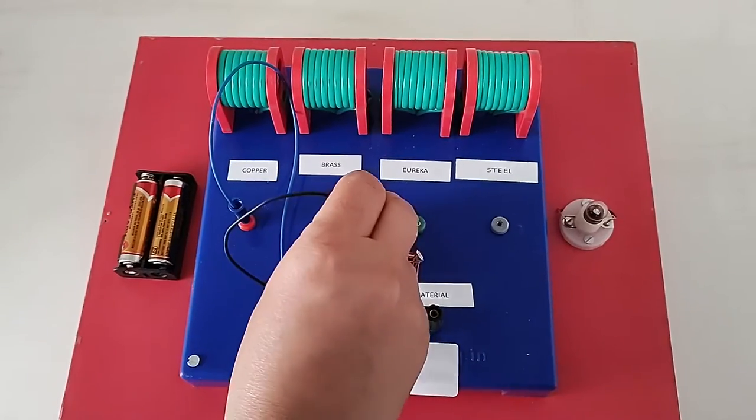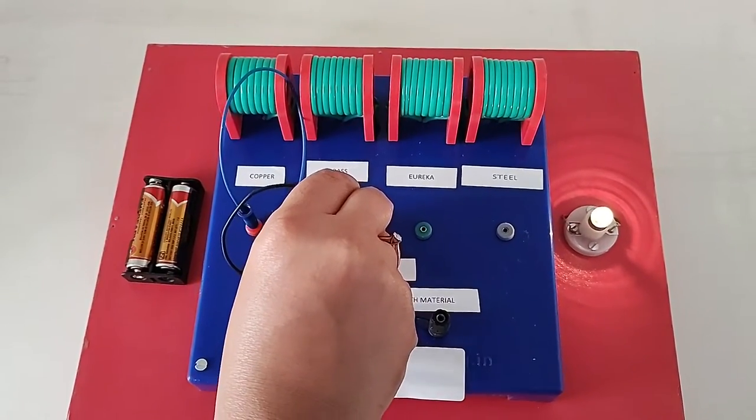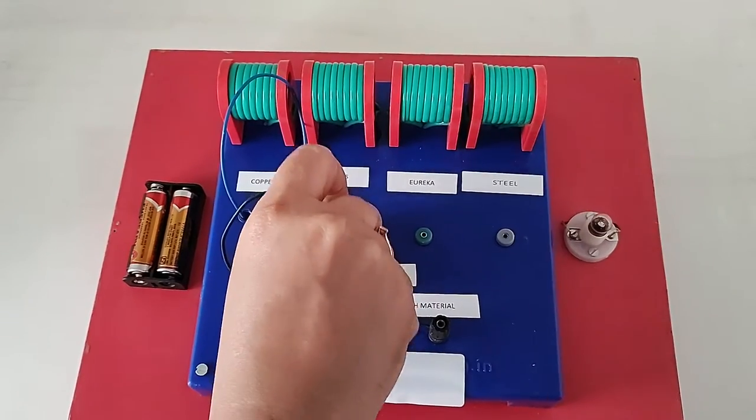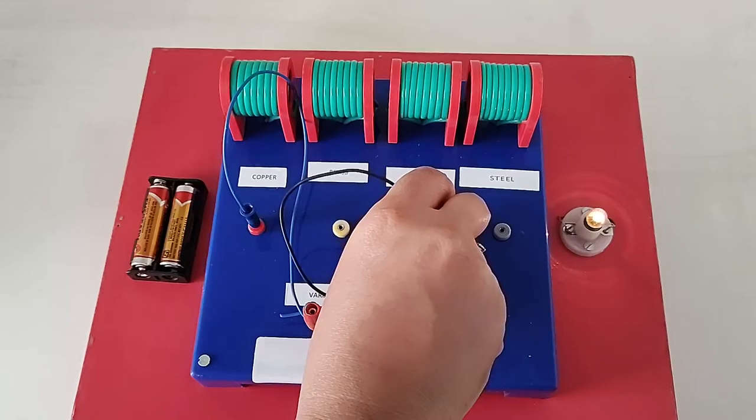Now I am repeating it once again. Just notice the glow. Look at the brightness of the bulb. Now I am just changing the material. Look at the glow, the brightness of the bulb.